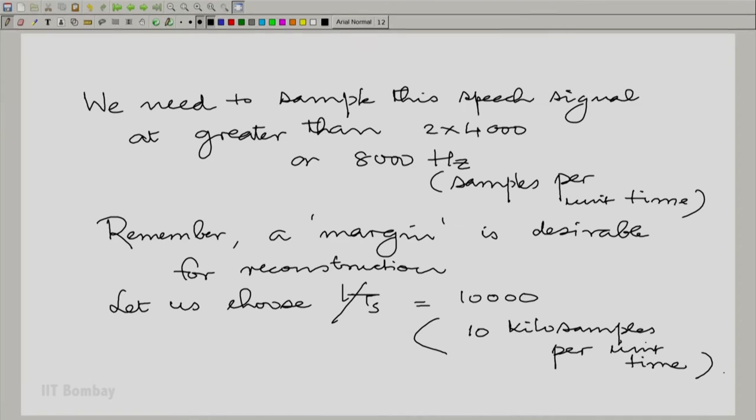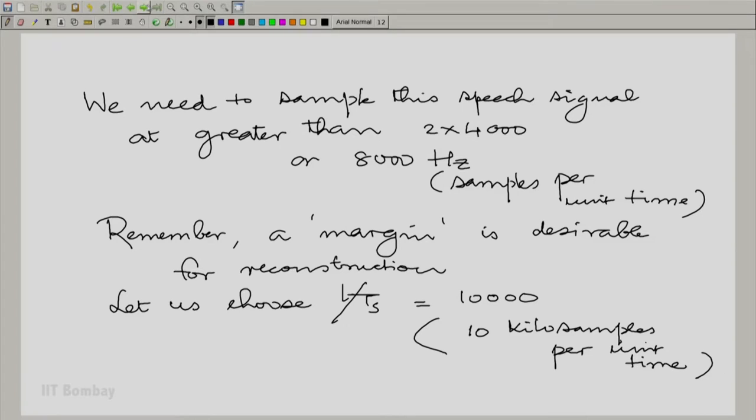Whereupon, what we expect is that if we have the speech spectrum, let us take what we call a prototype speech spectrum or let us just draw some spectrum for the speech signal. Instead of keeping on writing 4000, I will divide f by 1000. So I will write 4 and minus 4 here. And I have some spectrum. I will just show it by something like this.